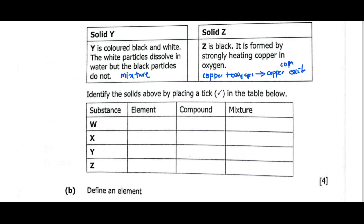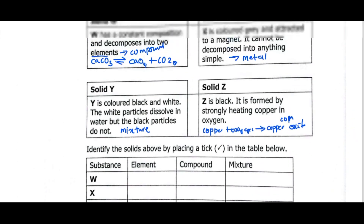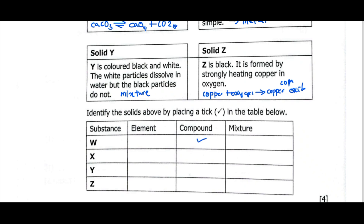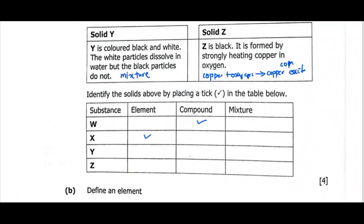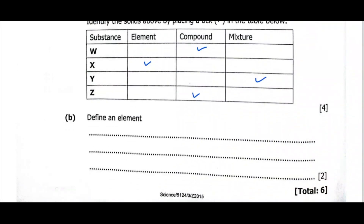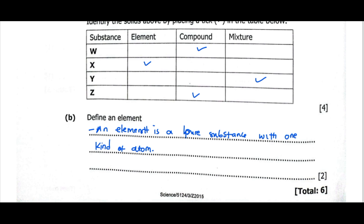Identify the solids W, X, Y, Z by placing a tick in the table. W is a compound. X is an element. Y is a mixture. Copper oxide Z is a compound. Then define an element. An element is a pure substance with one kind of atom. Under an element, we only have one type of atom. So that's it for this video. Thanks for watching.